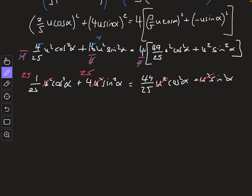And I'm going to go ahead and multiply by 25, don't forget if I multiply, I need to multiply each term by 25, so that's 25 across the board. What will happen is these will cancel, and I end up getting cosine squared alpha plus 100 sine squared alpha equals 49 cosine squared alpha plus 25 sine squared alpha.